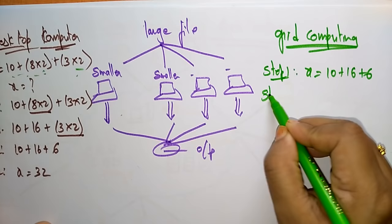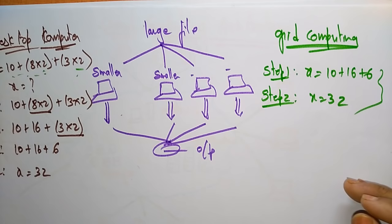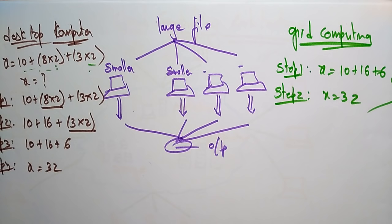Due to the multiplicity of resources, fewer steps are needed, which translates into shorter time frames. Compared to a desktop computer, grid computing calculates faster by using multiple processors. This concludes the topic of grid computing.